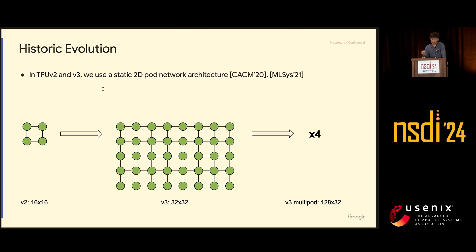Historically, we built 2D torus models, which is what we shipped in V2 and V3. In V2 it's a smaller supercomputer — each had only 256 chips. In V3 we scaled it up to 1,000 chips per supercomputer. We shipped a special version of V3 where you can concatenate four parts of V3, providing more flops — that was used for MLPerf.